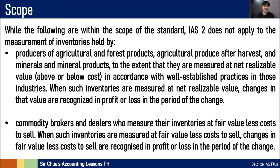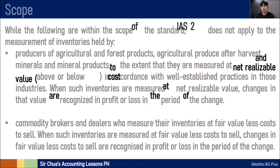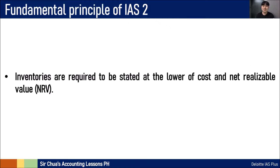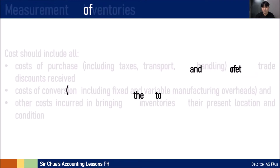When such inventories are measured at net realizable value, changes in that value are recognized in profit or loss. IAS-2 also does not apply to commodity brokers and dealers who measure their inventories at fair value less cost to sell. When such inventories are measured at fair value less cost to sell, changes in fair value less cost to sell are also recognized in profit or loss. The fundamental principle in IAS-2 says that when we present inventories in the financial statements, inventories are required to be stated at the lower of cost and net realizable value — or the lower of cost and NRV.